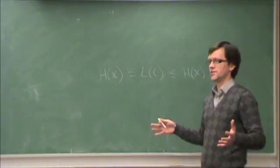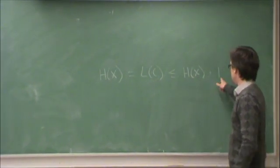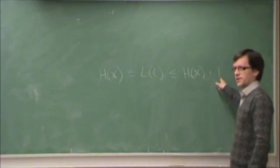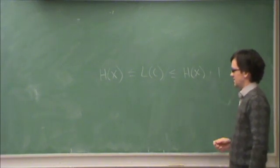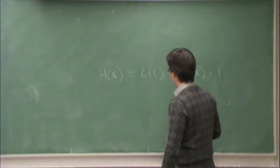The strategy was to extend the source - bind a number of source letters together into a larger element. Then this one-bit penalty per source letter becomes relatively less important. We ended off last time by proving Macmillan's theorem.